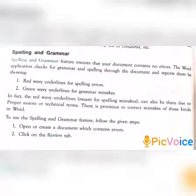The red wavy underline indicates a spelling mistake and the green wavy underline indicates a grammar mistake. Now let's learn the steps on how to use the Spelling and Grammar feature. First step: create a document which contains errors.